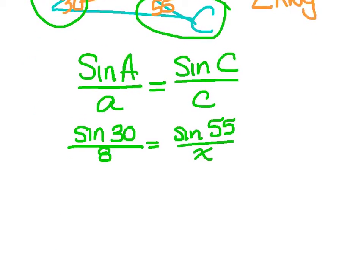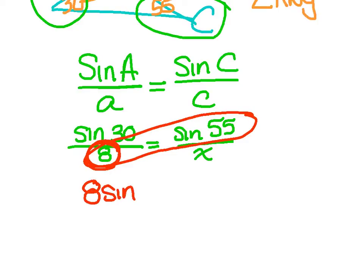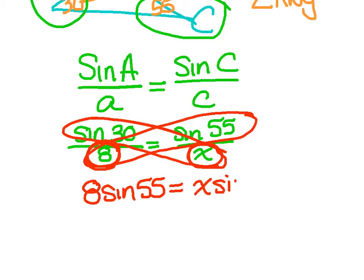Now let's plug in what we know. So the sine of angle A is 30, and side a is 8, equals the sine of 55, and side c is what I'm looking for, so I'm going to put an x there. At this point, I'm just going to cross multiply. I'm going to multiply these two together, and I just want to be clear that you're always going to write this single term in front. So it should say 8 sine of 55 equals x sine of 30.